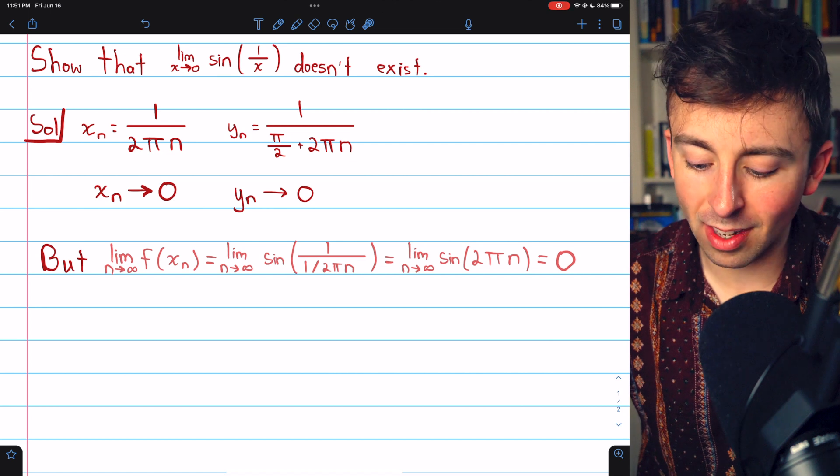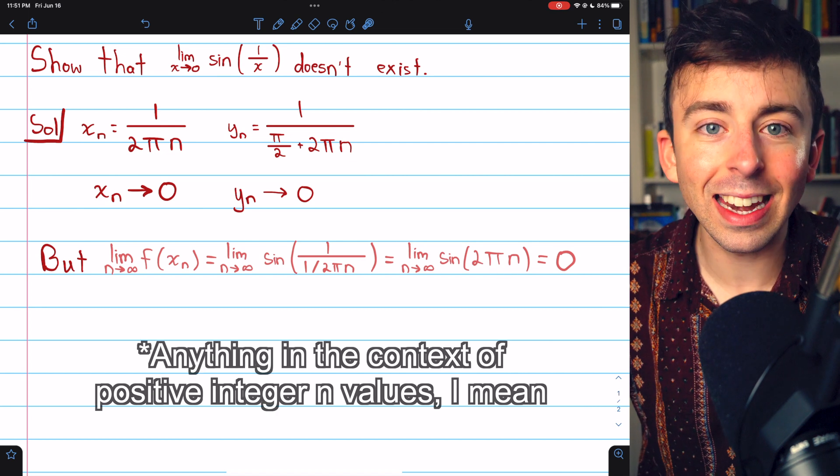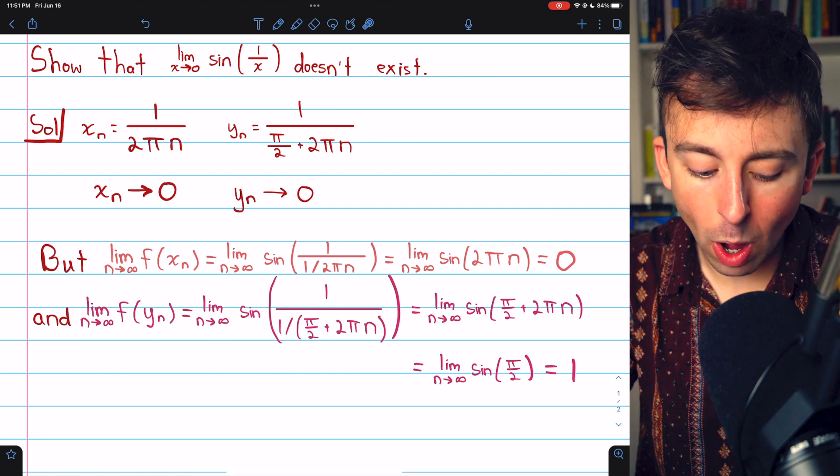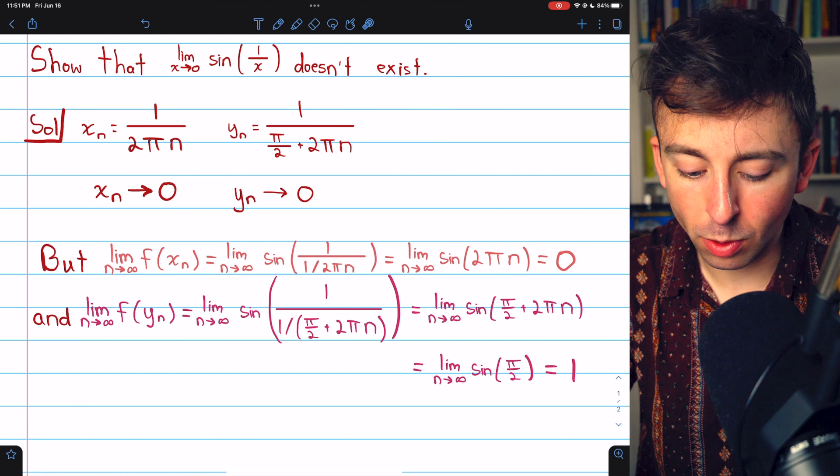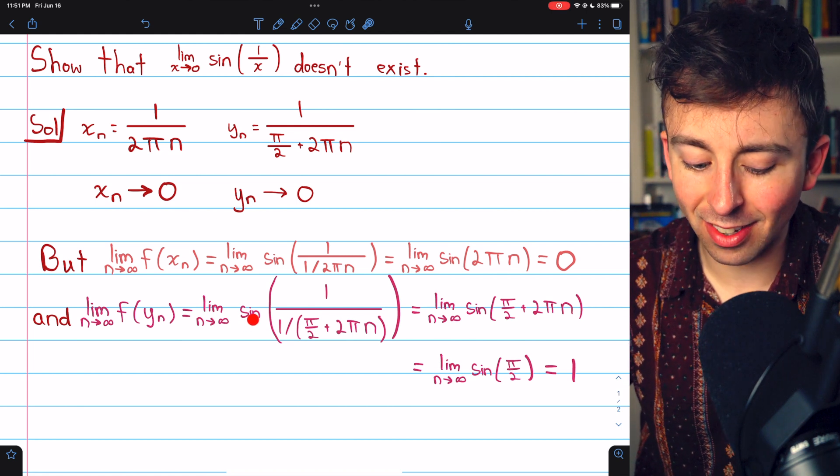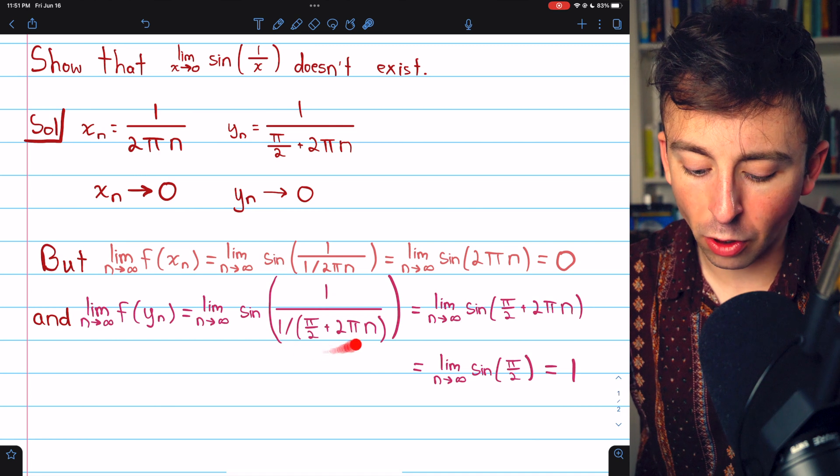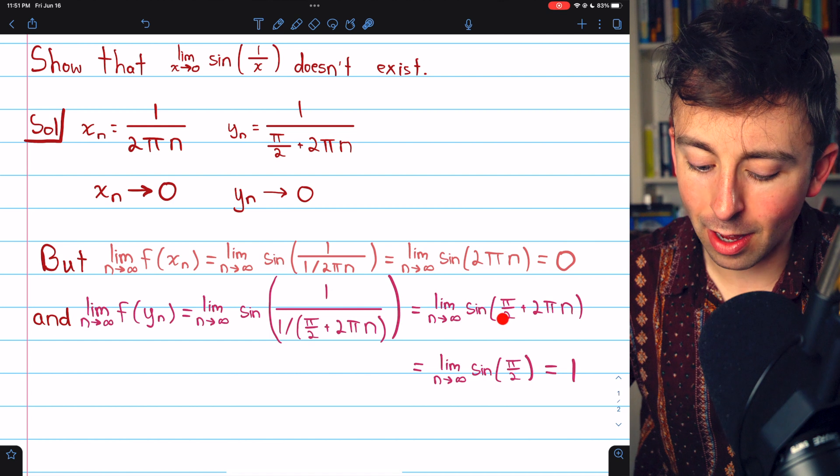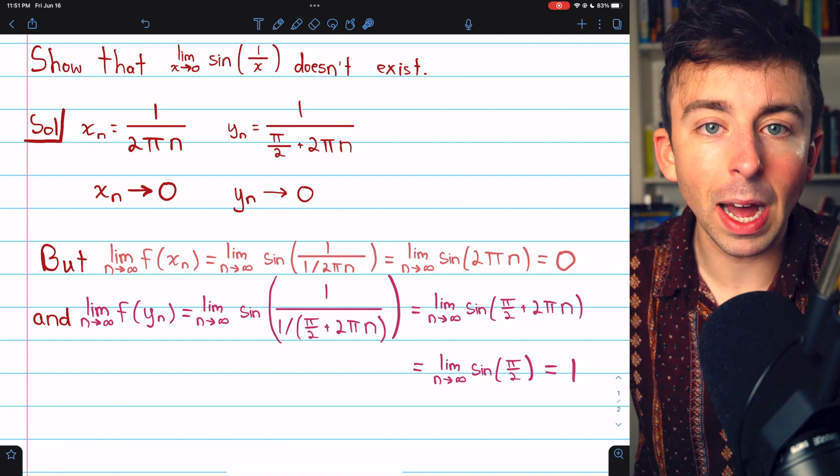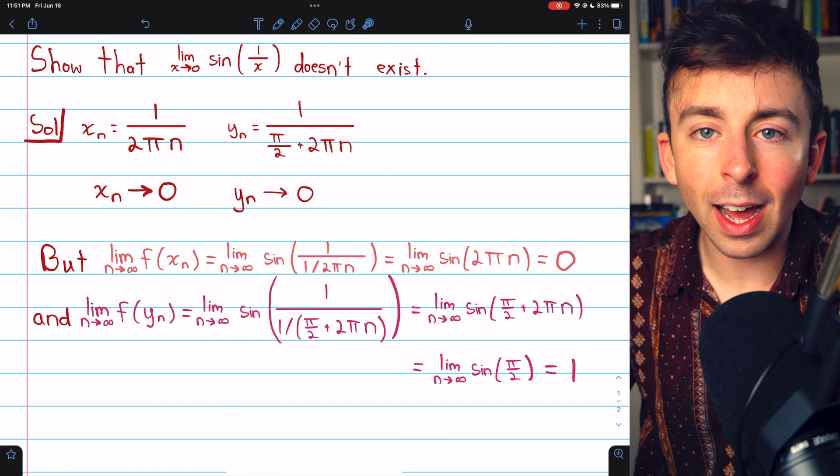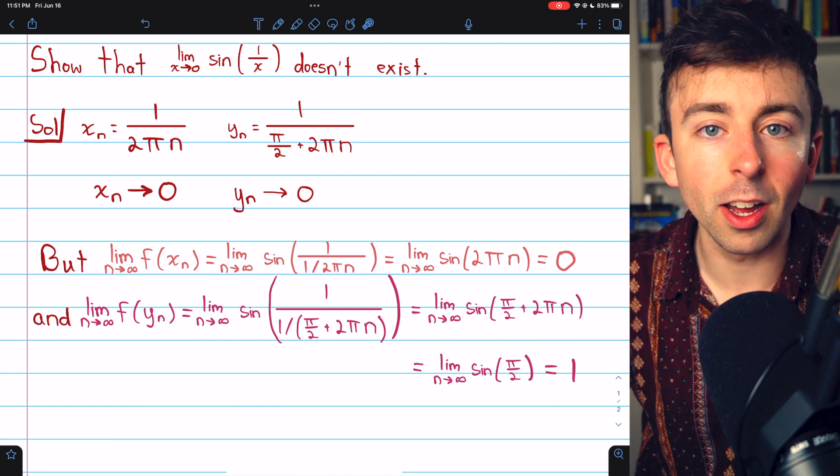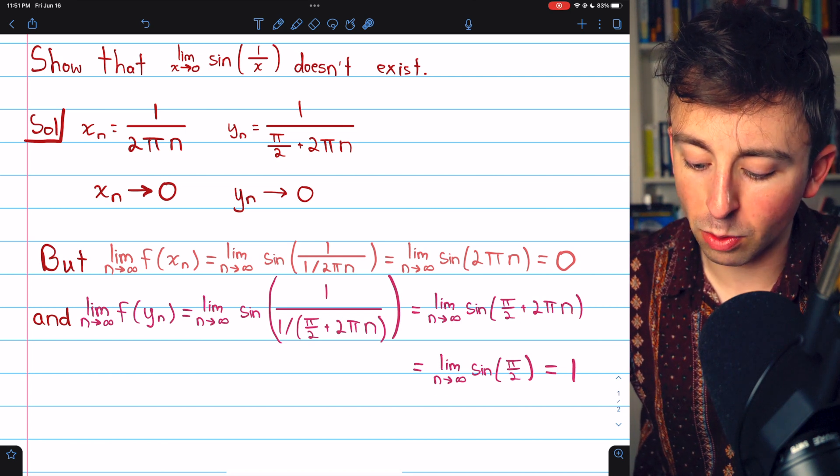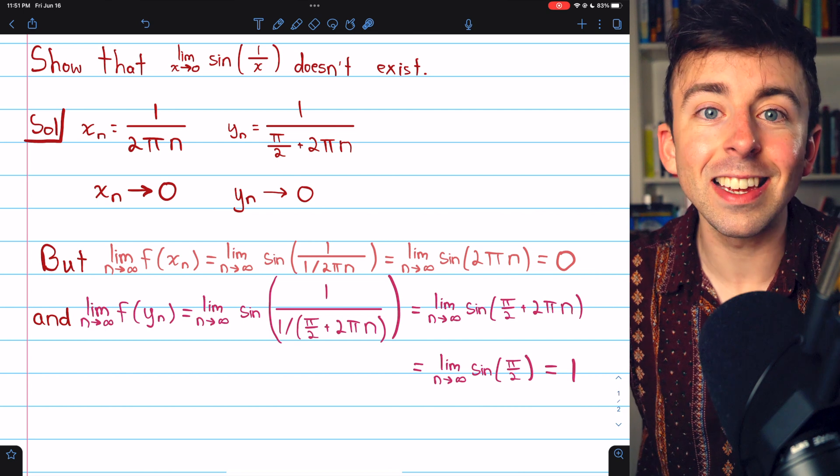But what happens with yₙ? The limit of f(yₙ) as n goes to infinity: we plug in yₙ and get sin(1/yₙ). This is going to get flipped and becomes sin(π/2 + 2πn). Now 2π is the period of sine, so the 2πn doesn't do anything at all. We can just get rid of it. So this equals the limit as n goes to infinity of sin(π/2), which is obviously just one.